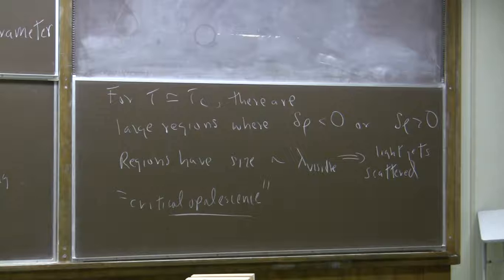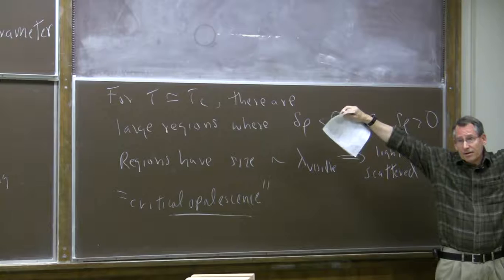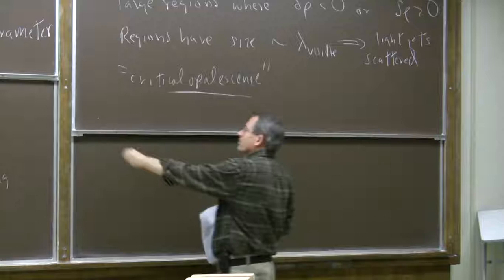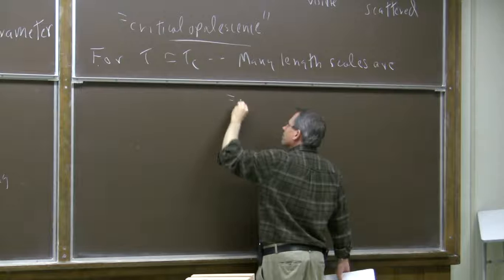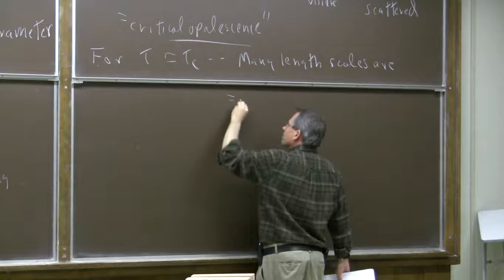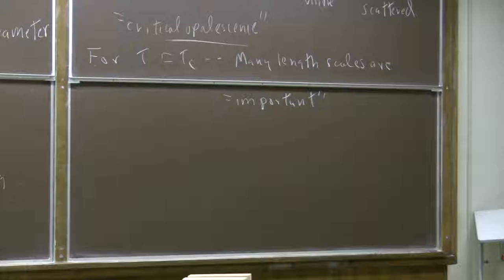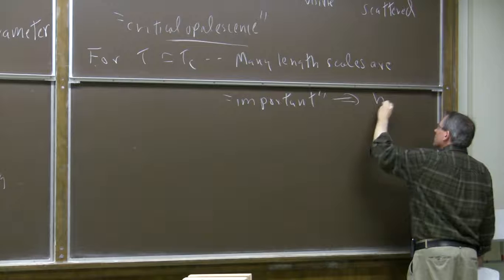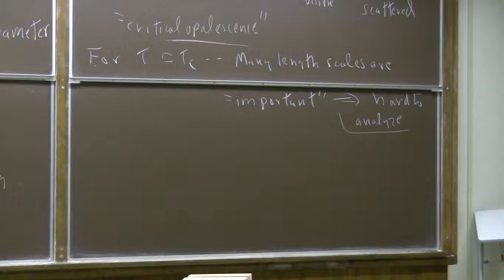What's happening near T_c is there are big fluctuations on large scales that take a long time to relax. For temperature comparable to T_c, many length scales are important. We have to figure out how to calculate the properties of a system in which dynamics occur at all different scales, which makes it hard to compute. This was a big problem for decades but it finally got cracked in the early 70s, due to work by Kadanoff and Wilson.